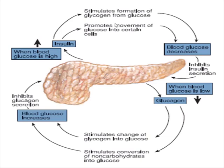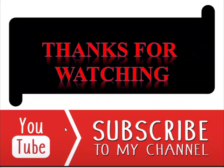When there is low concentration of glucose in the blood, the alpha cells secrete glucagon. Glucagon stimulates the conversion of glycogen into glucose and the conversion of non-carbohydrates into glucose. By these two ways, glucagon increases the concentration of glucose to maintain the homeostatic level.